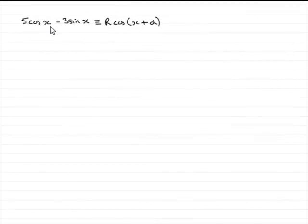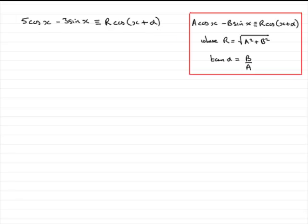In order to express 5 cos x minus 3 sin x in the form R cos(x + α), what you've got to know is this particular identity. A cos x minus B sin x, if it's identical to R cos(x + α), R is always given by the square root of A squared plus B squared and tan α is always B over A.